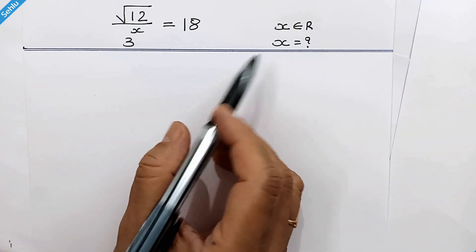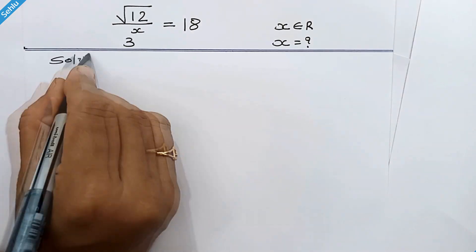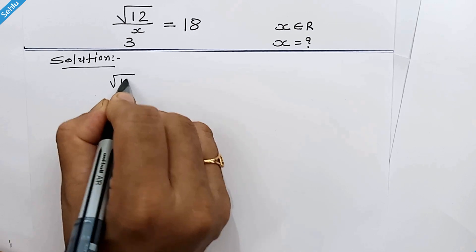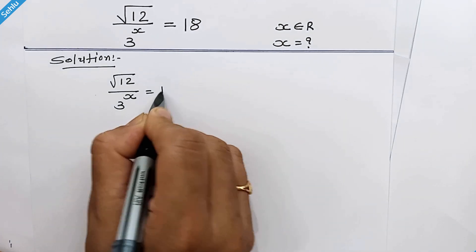Hello friends, what will be the value of x? Let's find out. The question is square root of 12 over 3 to the power x is equal to 18.